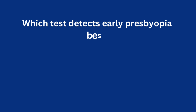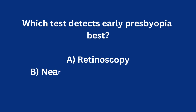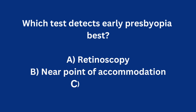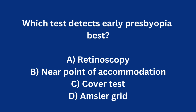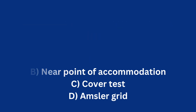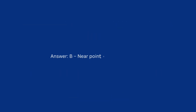Which test detects early presbyopia best? A) Retinoscopy, B) Near point of accommodation, C) Cover test, D) Amsler grid. Correct answer: B) Near point of accommodation. Presbyopia equals loss of near focus.